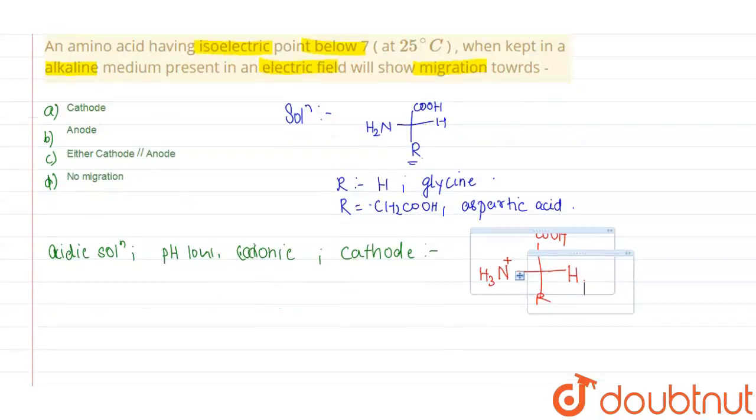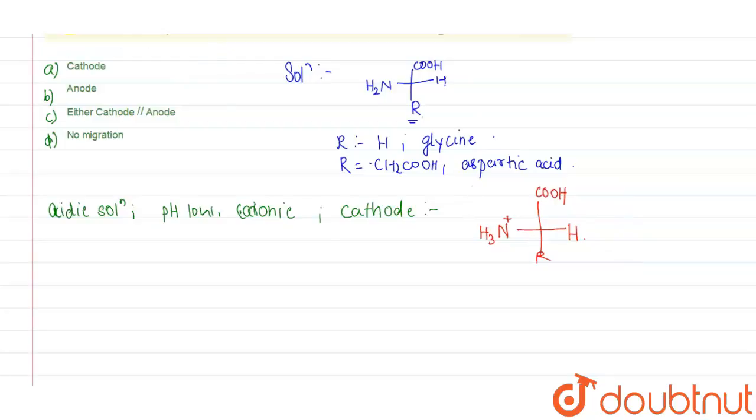Now let us talk about basic medium. In basic medium, when the pH is high, this amino acid exists in anionic form and it will migrate towards anode.